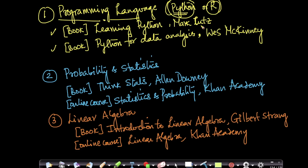There is a book called Learning Python by Mark Lutz, which gives you an overview of the language — everything from what is a class, a variable, a dictionary, etc. There is also a specific book by O'Reilly called Python for Data Analysis by Wes McKinney, which covers data analysis and specialized libraries like NumPy, SciPy, and Matplotlib — very useful for machine learning, data science, and artificial intelligence.